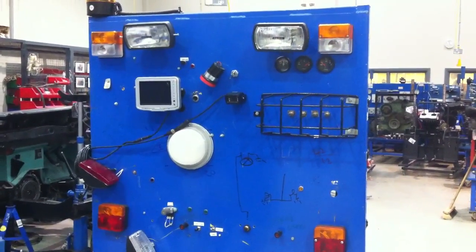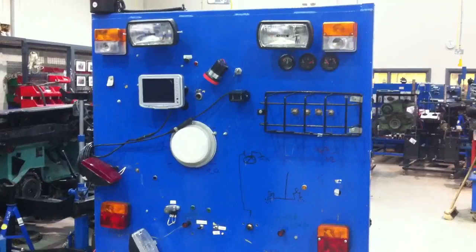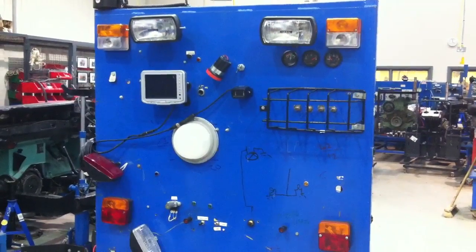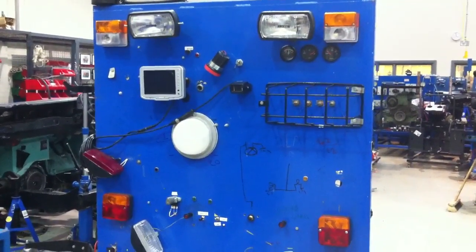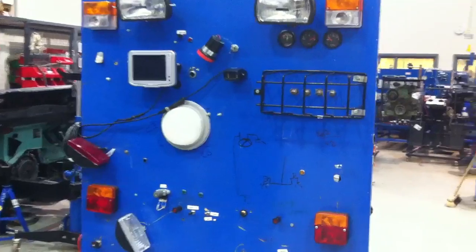Okay, here we have a circuit wiring board typical of what's produced after two weeks of the electrical module. On the board you can see that we have a standard Lucas ignition switch.